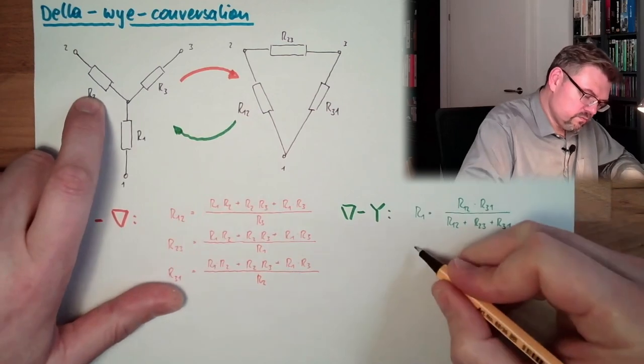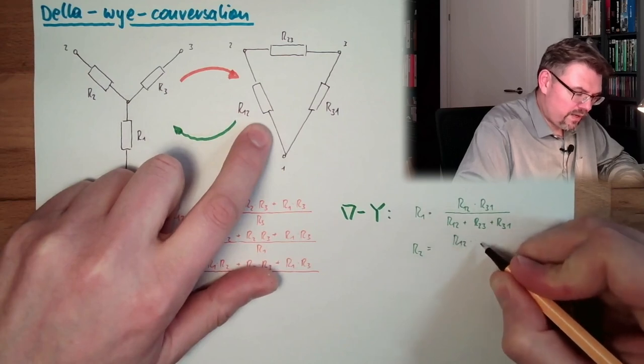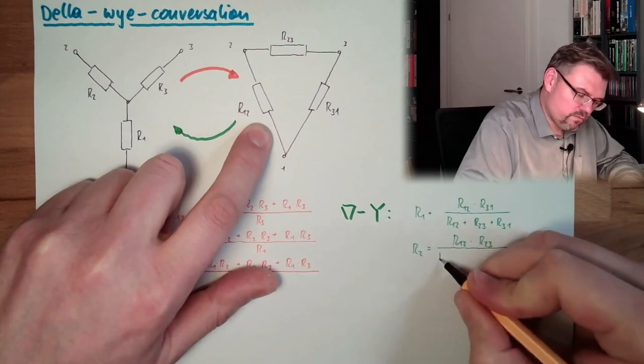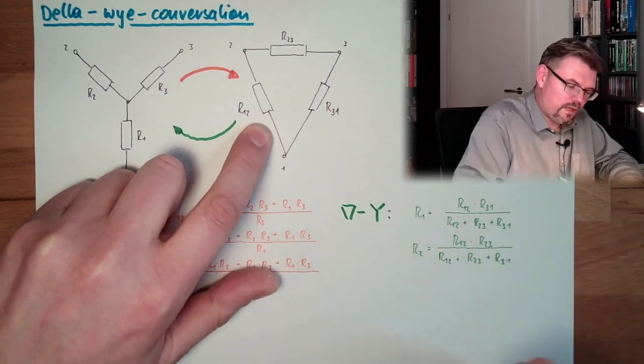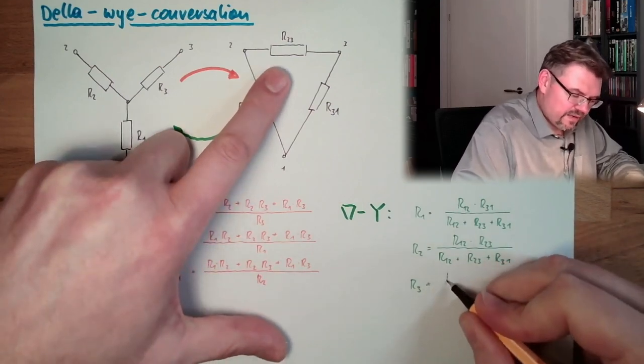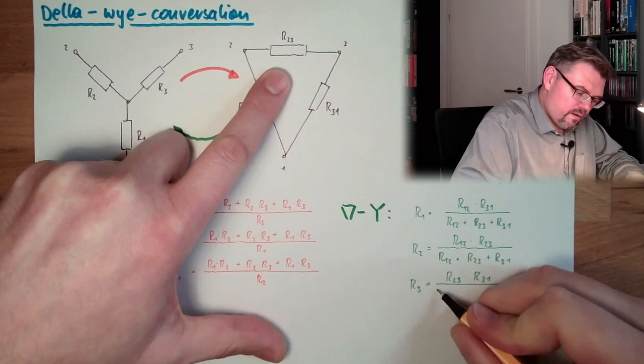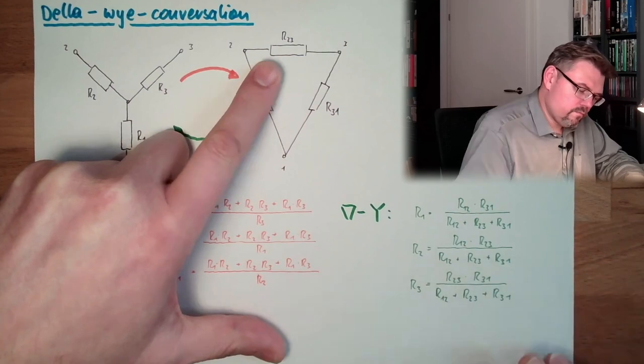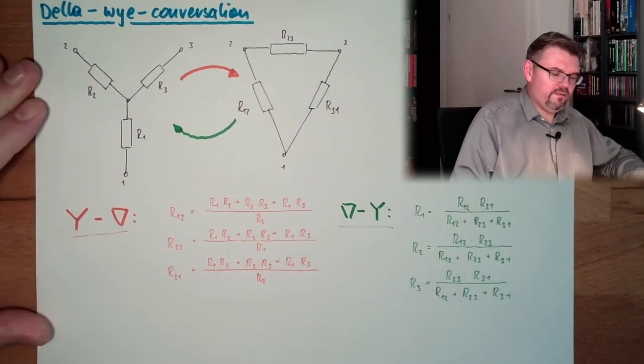Now let's come to r2, and this is where r12 is inside. So this is r12 multiplied by r23 divided by the sum of all. The same rule applies for r3. So where 3 is inside, everything is r23 multiplied by r31 divided by the sum of all. That's it, delta-Y, Y-delta conversion.